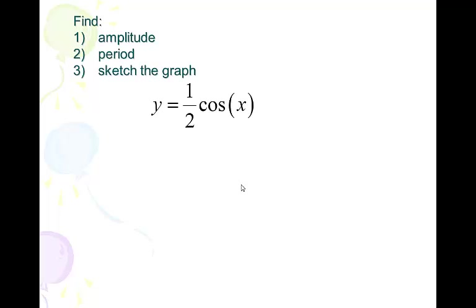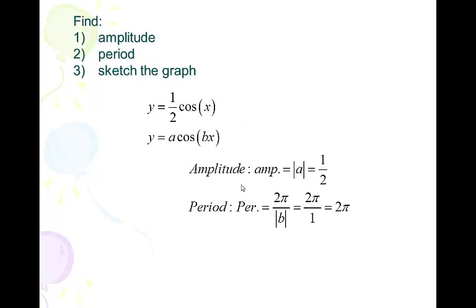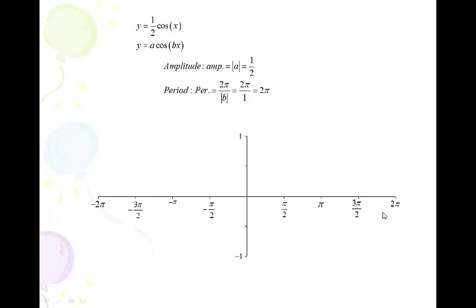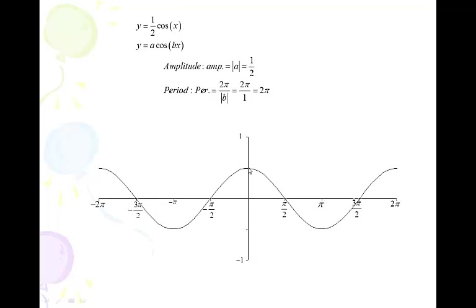Now let's do a cosine curve: y = ½cos(x). My a is ½, my b is 1, and there is no c value, so there is no phase shift. The period is going to be 2π. I put four hash marks to the right and four to the left. We normally intersect the y-axis at the max, which we do here. Because our amplitude is ½, we only go up to ½ and only down to negative ½. This is essentially the cosine curve, just compressed a little bit vertically.